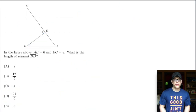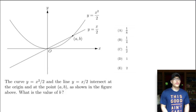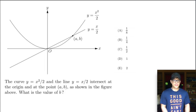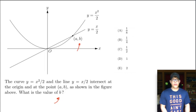Let's go on to the next problem. The curve y equals x squared over 2 and the line y equals x over 2 intersect at the origin and at the point (A, B) as shown in the figure above. What is the value of B? B is the y-coordinate of that intersection point, so we need to find the y value.